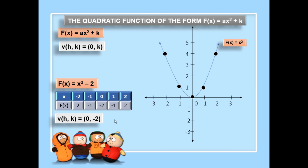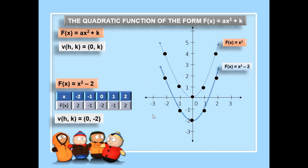We have the quadratic function x squared minus 2. If x is 0, the value of the function, which is also the value of k, is negative 2. So our vertex hk has the coordinates (0, negative 2), meaning k is equal to negative 2. The graph is translated 2 units downward.